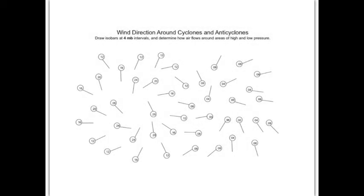This is wind directions around cyclones and anticyclones. I'll describe what anticyclones means in just a second. These look like a bunch of lollipops, but these are actually pretty meaningful symbols. One thing I need to tell you about is what MB means right here — that is a unit called millibars, M-I-L-L-I-B-A-R-S.